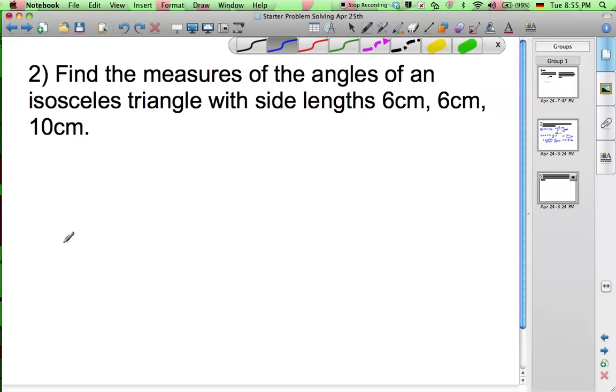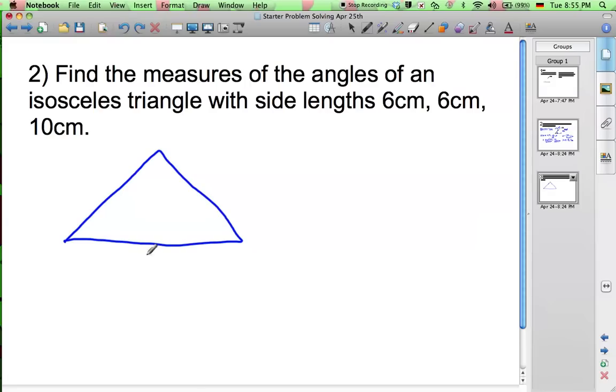We have an isosceles triangle that is 6, 6, 10. So that's 6, 6, and 10. Right away you can see there are no right angles here. So whenever you have that situation, sometimes you've got to look for where we can draw in a right angle, or a right triangle.